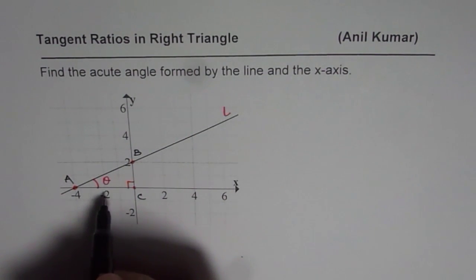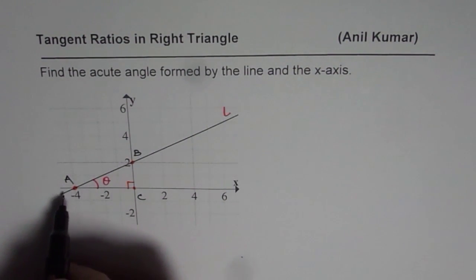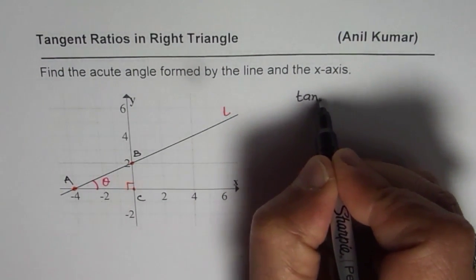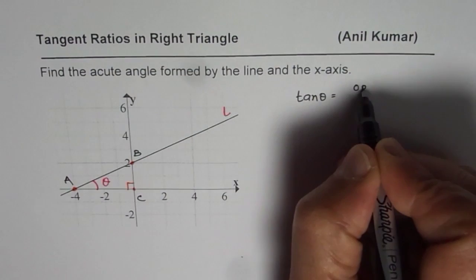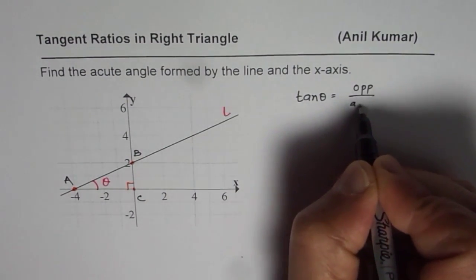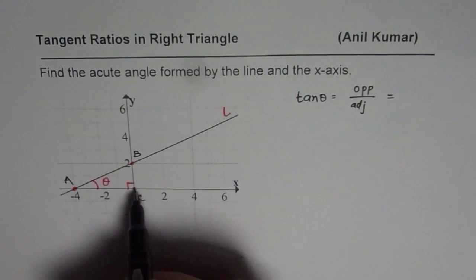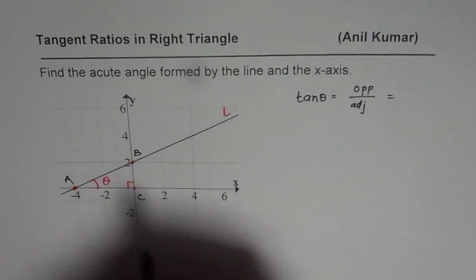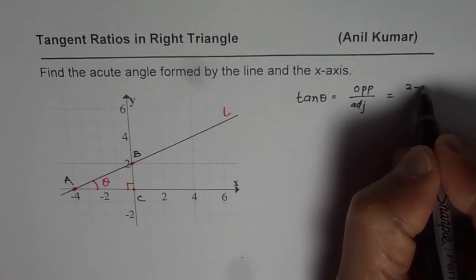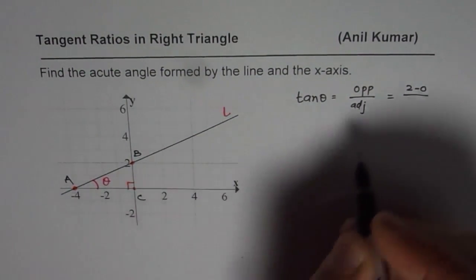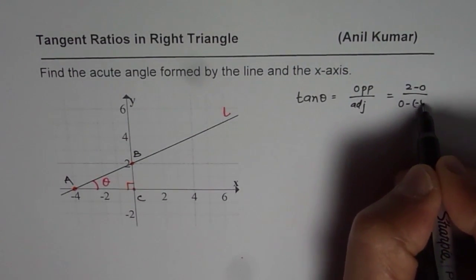And what is tan theta here? We have tan theta, which is opposite side over adjacent. Now, in this particular case, opposite side is 2 units from 0 to 2. So, we can say 2 minus 0 and the adjacent side is 0 minus minus 4. Let me write 0 minus minus 4.